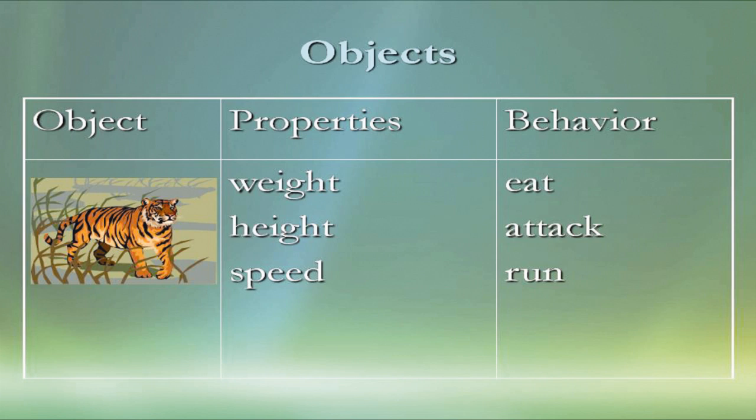Some of the properties of a tiger might be weight, height, speed, and some of the behaviors of a tiger might be the ability to eat, attack or run.